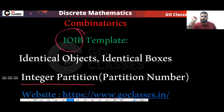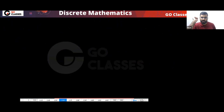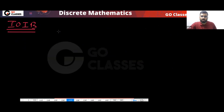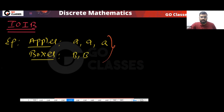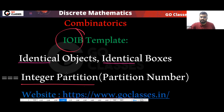The next template is IO IB — Identical Objects and Identical Boxes. In this template, everything is identical. For example, let's assume your objects are apples: A, A, A, and your boxes are also the same: B, B. Here both objects and boxes are identical.